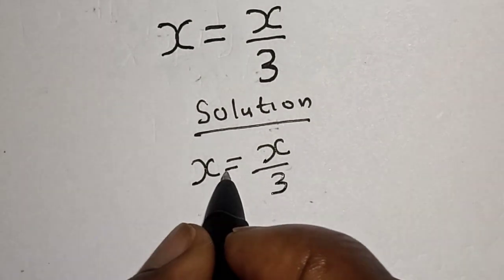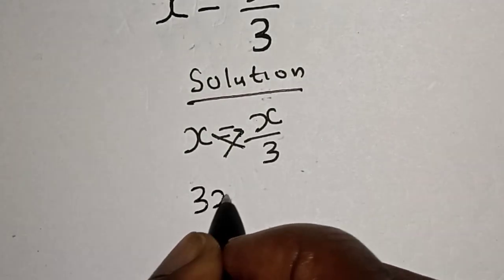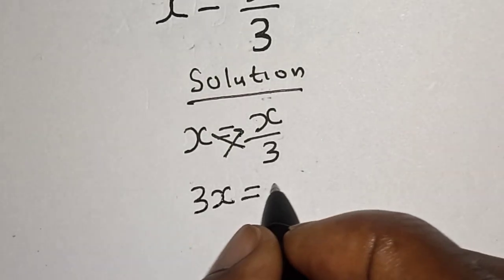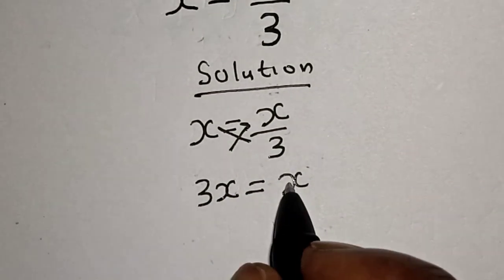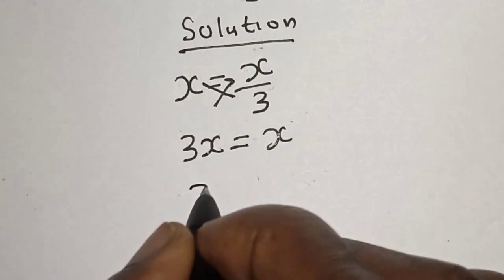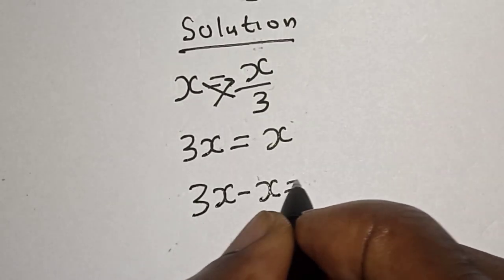Let's cross multiply. We have 3x equals x. Now let's bring this x to this side: 3x minus x equals 0.